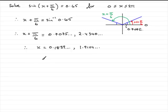Now we are requested to give these answers to two decimal places. So if we do that, the first value of x is going to be 0.18 radians, just put radians.